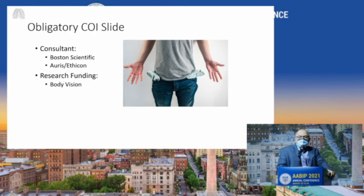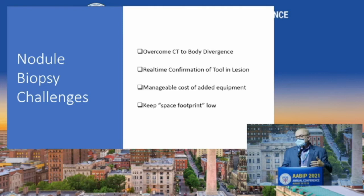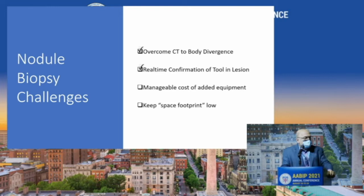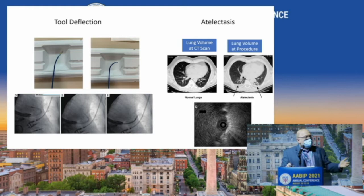Here's the obligatory COI slide — not a lot of conflict of interest here. So what are the challenges with nodule biopsy? We've been hearing about that today and tomorrow. You have to overcome CT-to-body divergence, real-time confirmation of tool and lesion — which is my bias, the most important aspect — manageable cost of equipment, and keeping your space footprint low, because bronch suites are fixed size and more equipment means less room.